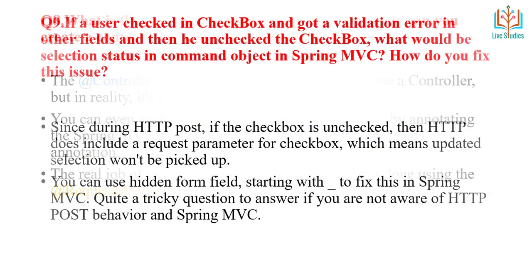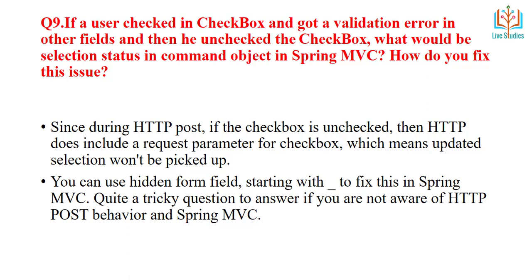Next important interview question: If a user checks a checkbox and gets a validation error on another field, and then unchecks and rechecks the checkbox, what would be the selected status in a command object in Spring MVC? During an HTTP POST request, if a checkbox is unchecked, HTTP does not include a request parameter for that checkbox, which means the update selection option will not be picked up. You can fix this using a hidden form field starting with a specific prefix. This is a tricky Spring MVC question related to HTTP POST behavior.